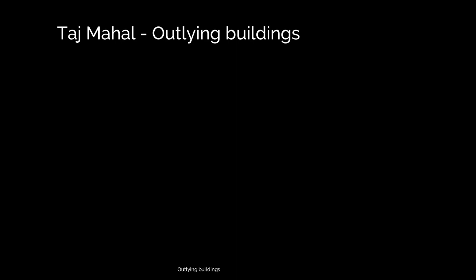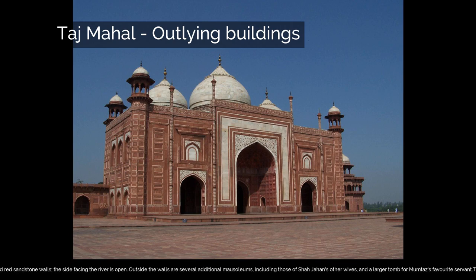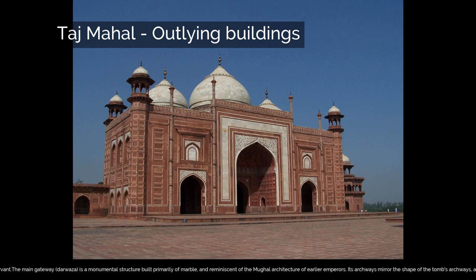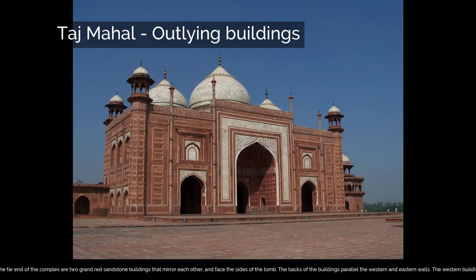The Taj Mahal complex is bordered on three sides by crenellated red sandstone walls; the side facing the river is open. Outside the walls are several additional mausoleums, including those of Shah Jahan's other wives and a larger tomb for Mumtaz's favorite servant. The main gateway, or Darwaza, is a monumental structure built primarily of marble and reminiscent of earlier Mughal architecture. Its archways mirror the shape of the tomb's archways, and its pishtak arches incorporate the calligraphy that decorates the tomb. The vaulted ceilings and walls have elaborate geometric designs. At the far end of the complex are two grand red sandstone buildings that mirror each other and face the sides of the tomb — the western building is a mosque and the other is the jawab, thought to have been constructed for architectural balance, though it may have been used as a guest house.